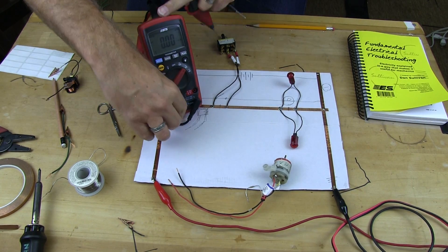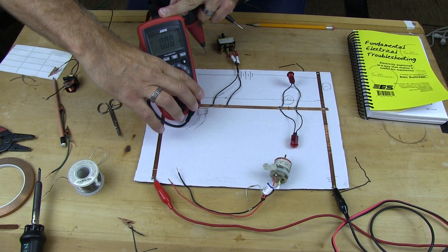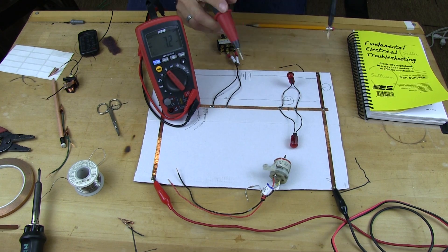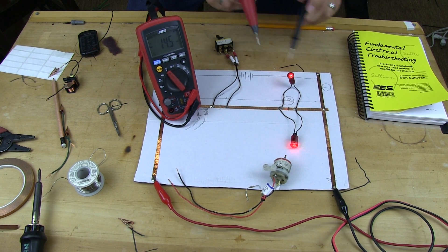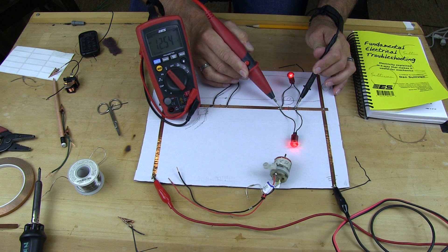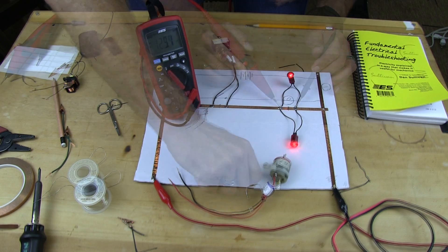We can also read voltage drop by putting it on volts. Because this is a parallel system, voltage coming in and voltage coming out on both of them will be the same. Yep, 12.54, so I got a full system voltage drop across that.